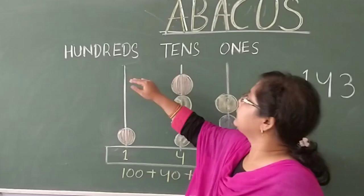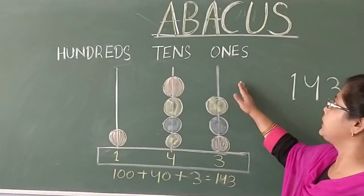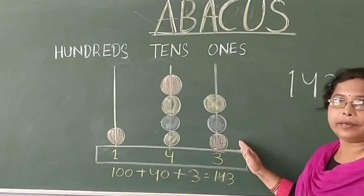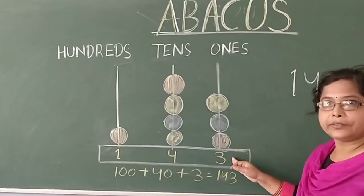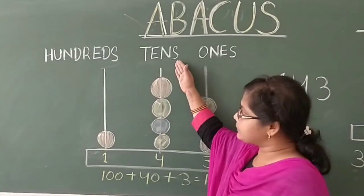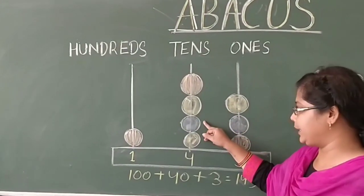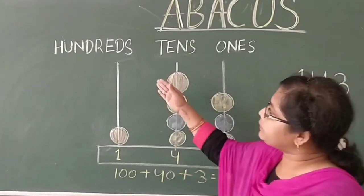Here is the hundreds place. Here is the tens place and here is the ones place. In ones place, how many bits are there? Count 1, 2, 3. So, I have written here 3. In tens place, how many bits are there? 1, 2, 3, 4. So, I have written here 4.